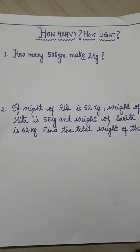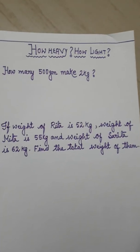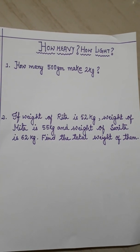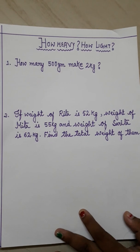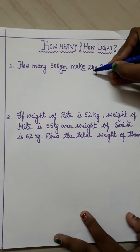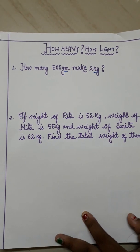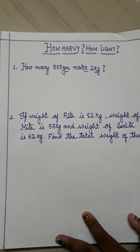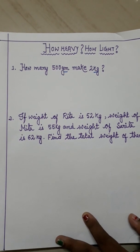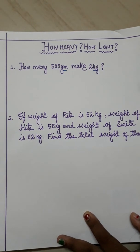So our first question is: how many 500 gram make 2 kg? At first what you have to see here, one unit is in gram and another unit is in kg. So of course when there are two units, you have to convert them into a single one. Let us convert the kg into gram.